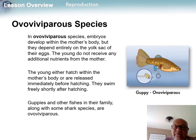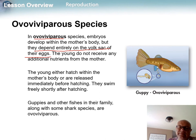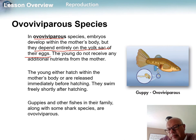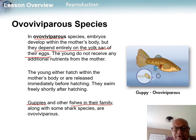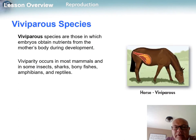Ovoviviparous is a bit different — the embryos develop within the mother but are still inside their eggs, so the egg is their food source. They don't get additional nutrients from the mother, but they do have a bit more protection. Guppies are a famous example, and some shark species are also ovoviviparous.